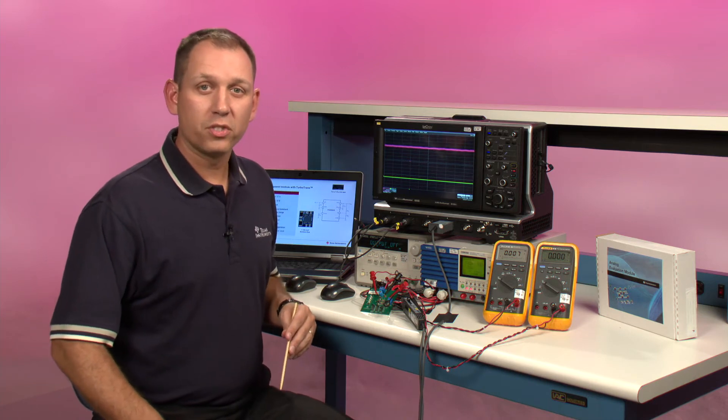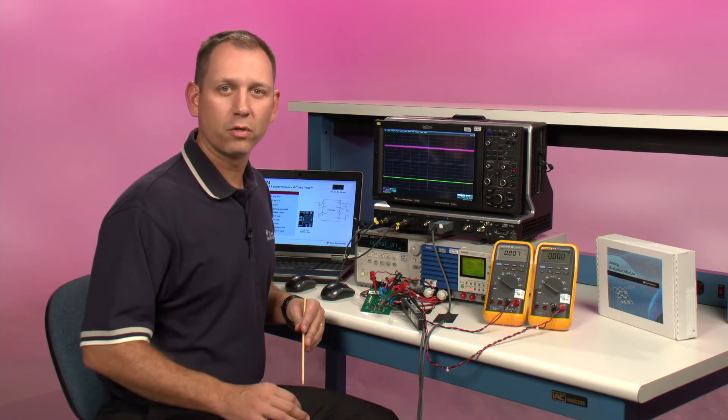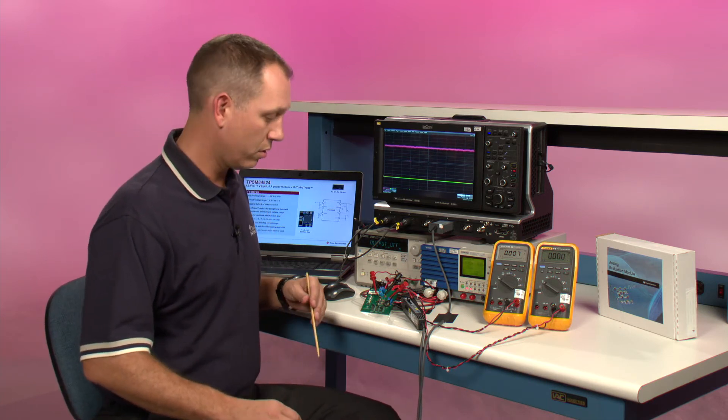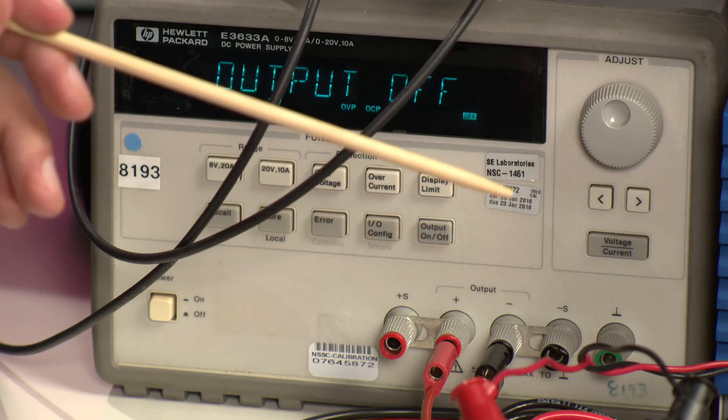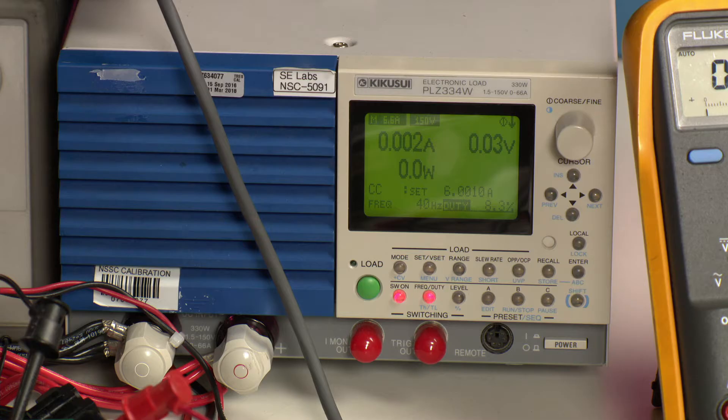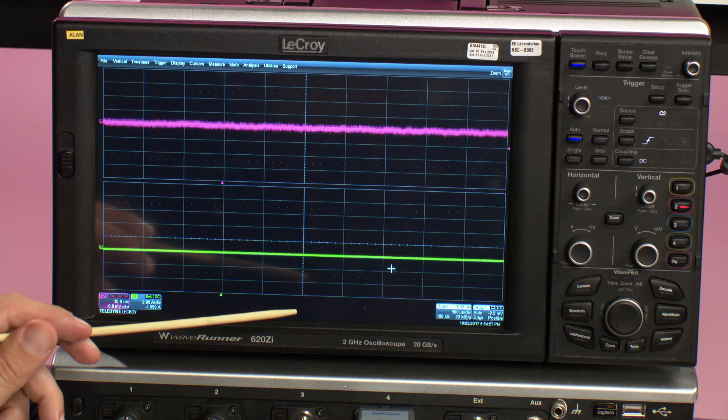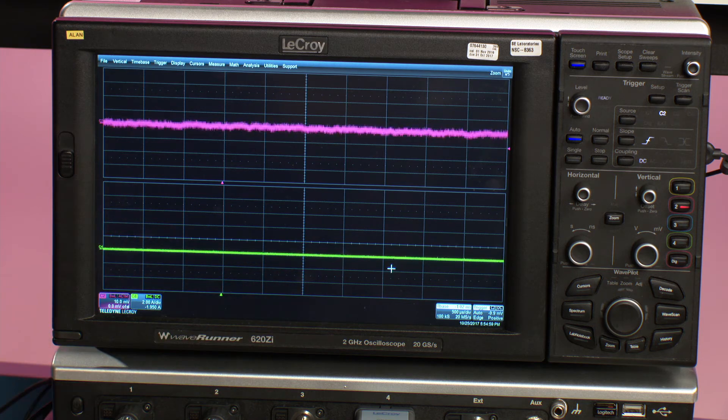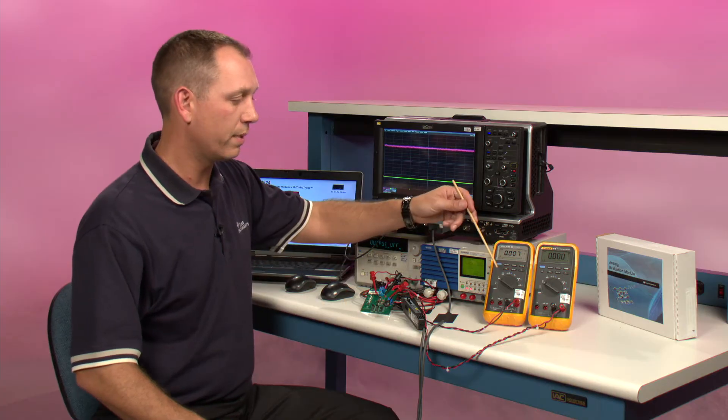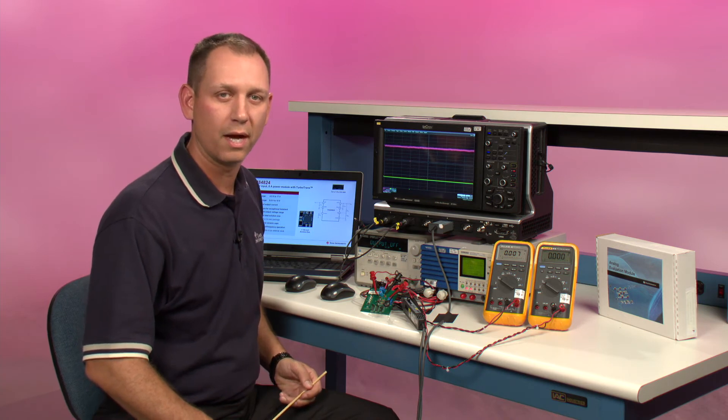So now I'm going to show you how to properly set up the board and measure for transient response. So for this board I am connected to an input power supply, my load is connected to the output, and I have an oscilloscope for measuring the output transient waveforms and two voltmeters for measuring the input voltage and the output voltage.